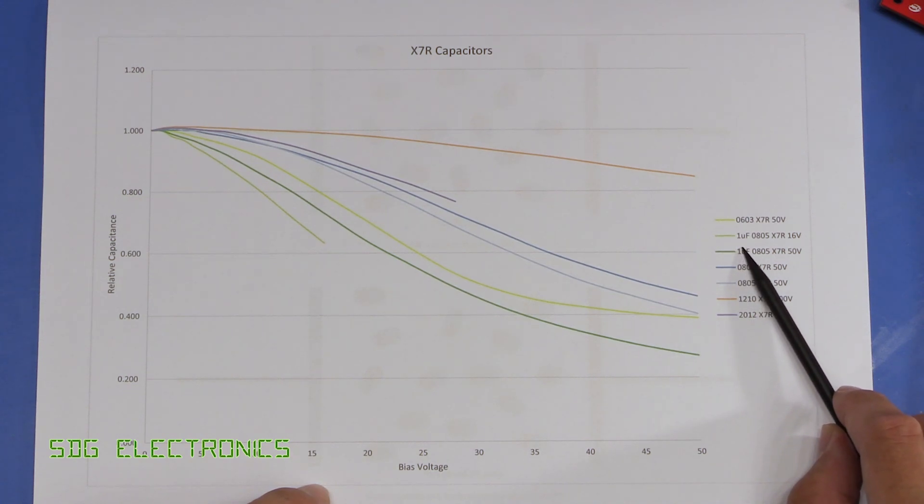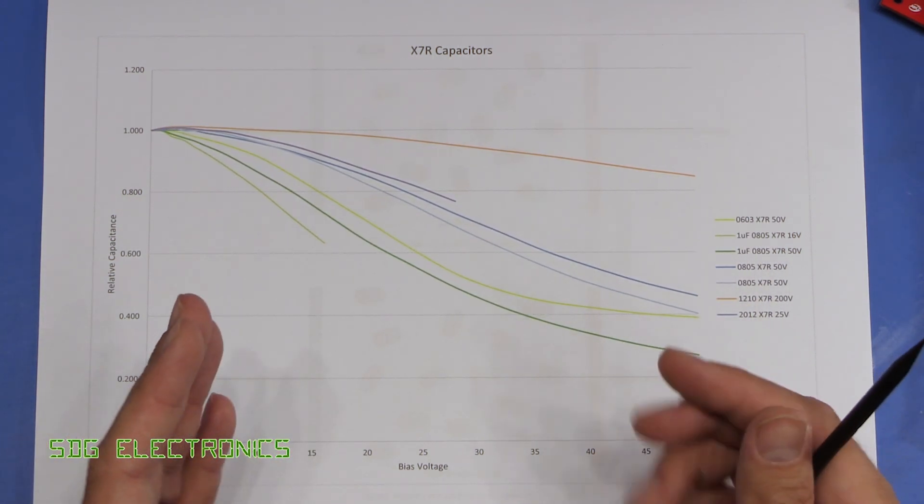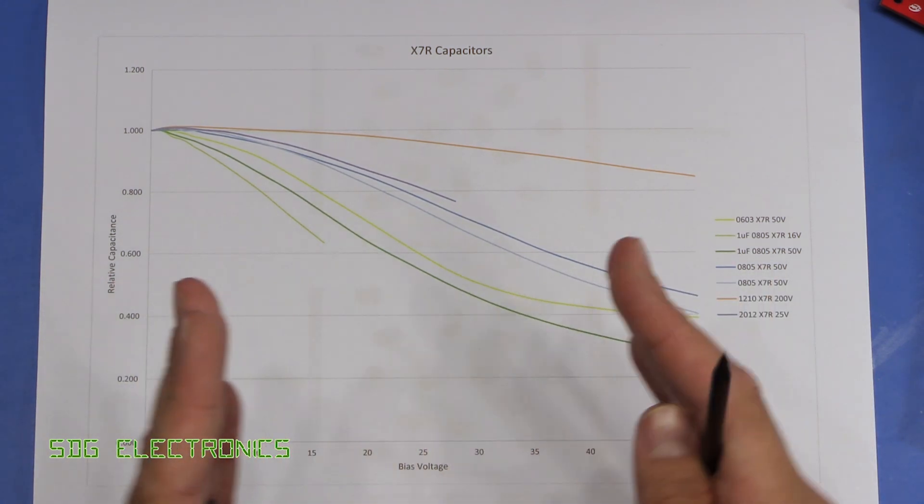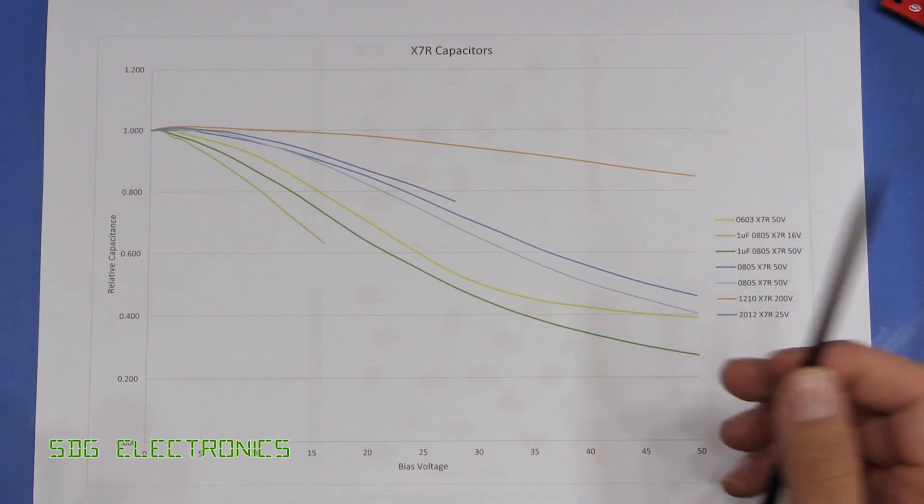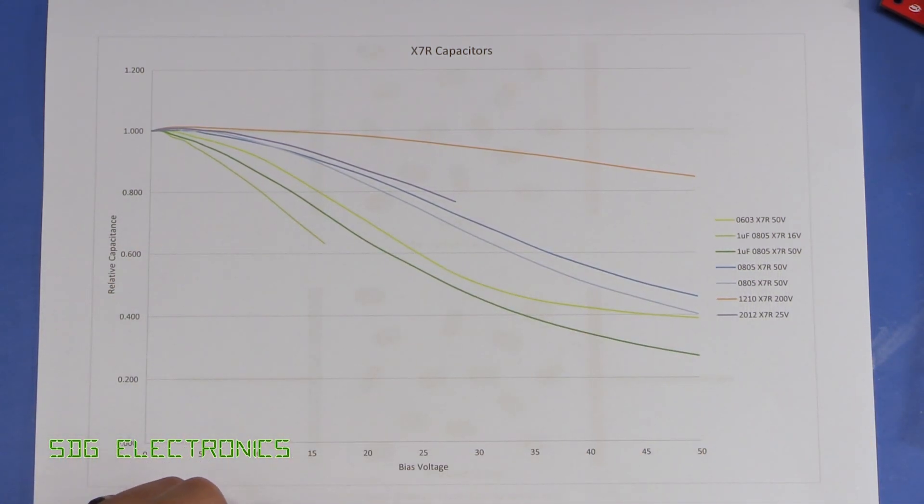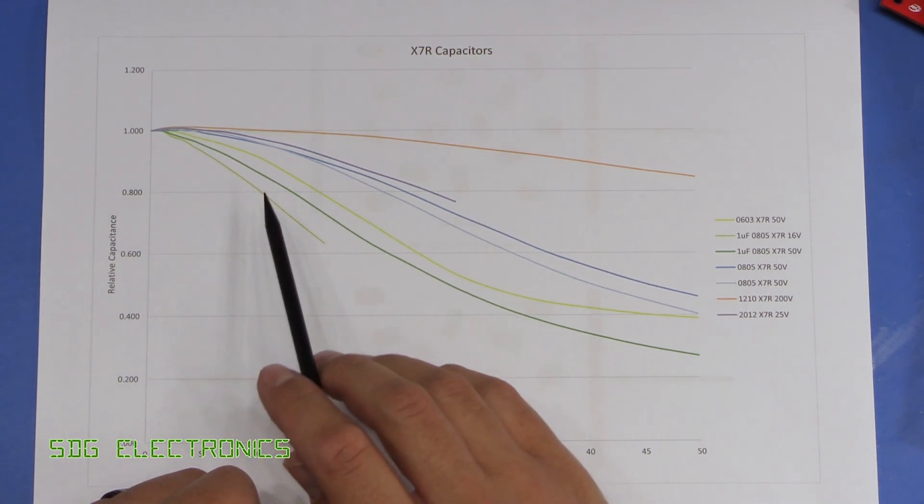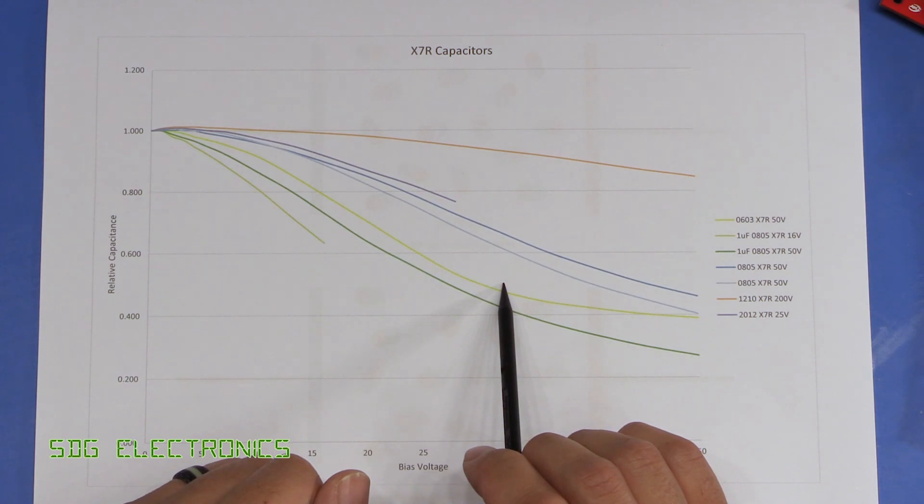And similarly for the higher value capacitors, so these one microfarad capacitors, in order to fit them into an 0805 component size, the layers are way thinner than they are for a 100 nanofarad capacitor. And therefore the electric field is even greater in those, meaning that the dielectric constant decreases much more rapidly as a result of the DC bias across the two plates.